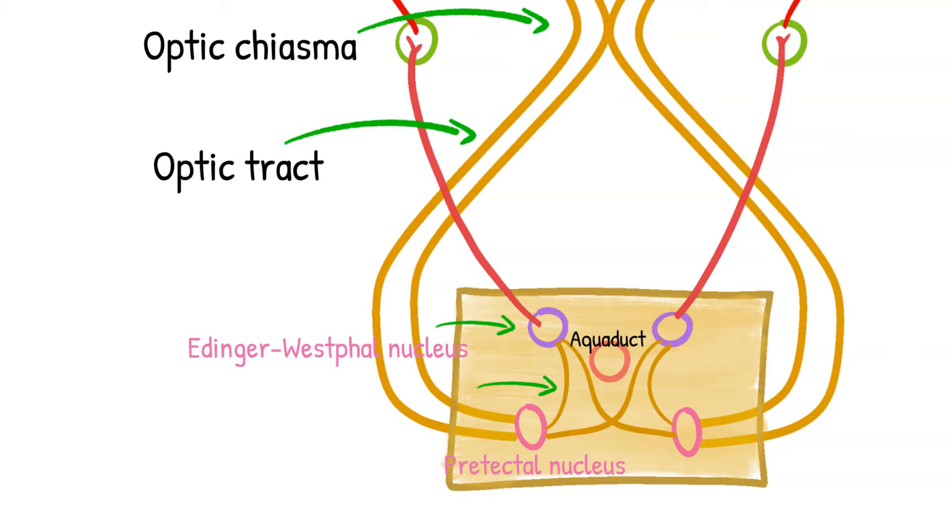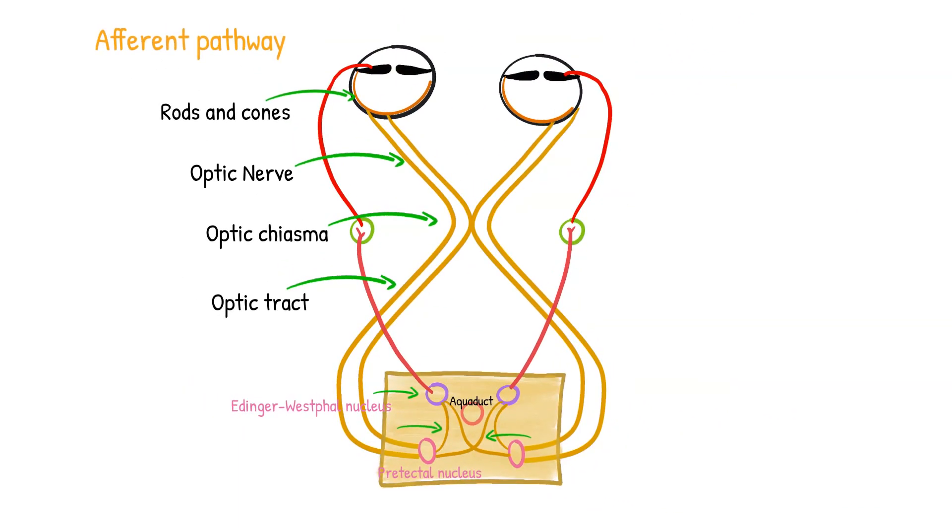While the other half cross, mainly via the posterior commissure to the contralateral Edinger-Westphal nucleus. This connection forms the basis of the consensual light reflex. Each pre-tectal neuron functions as if it gets similar input from each eye and projects similarly in each Edinger-Westphal nucleus.